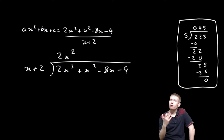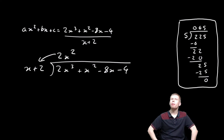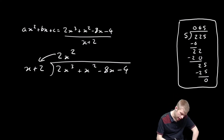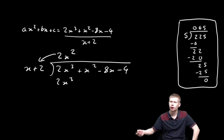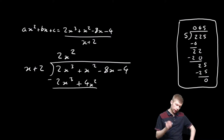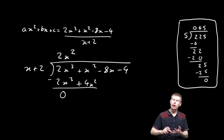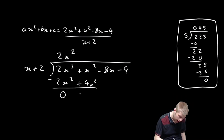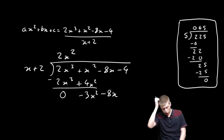Now I multiply to find the remainder: 2x² multiplied by (x + 2) gives 2x³ + 4x². Then I take away. The 2x³ terms cancel, and I get x² − 4x², which is −3x². Then −8x comes down to join.